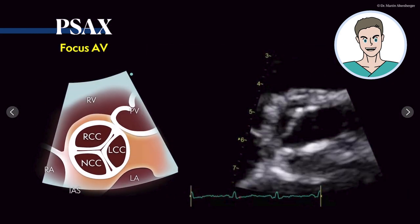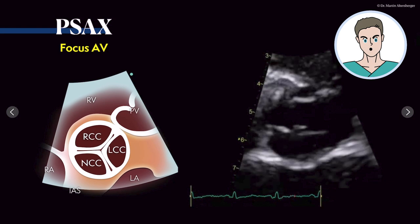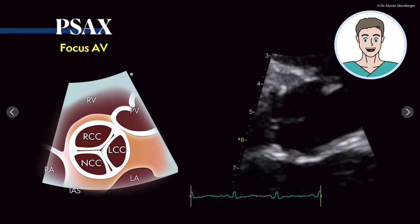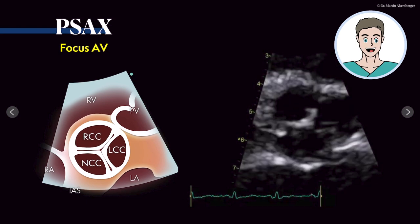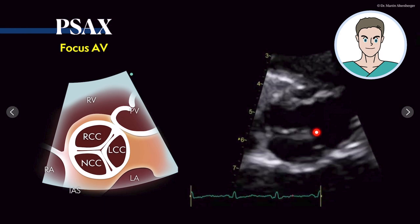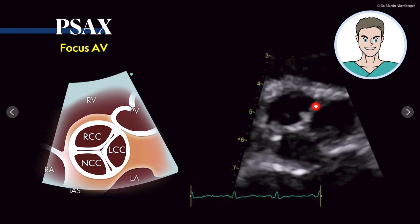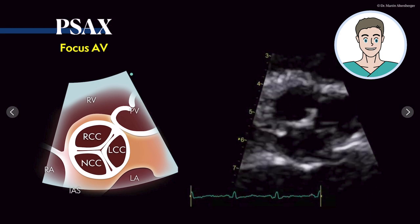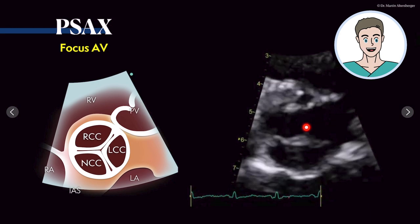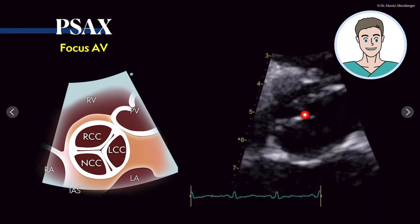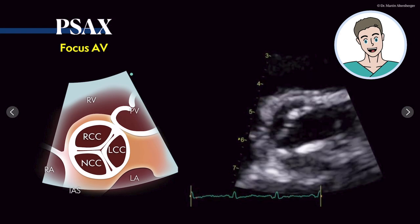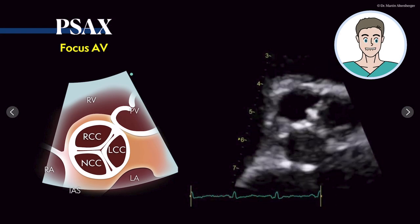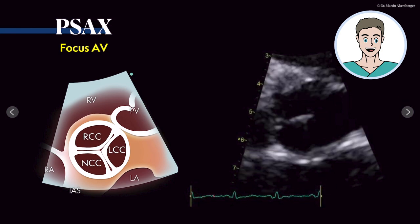Also in the parasternal short axis you include a focused view of the aortic valve where you see all three cusps again, and you can appreciate that the cusps here are sclerotic. There is a little bit of calcification, but overall the opening is preserved. So this is most likely not a severe aortic stenosis because the opening seems preserved.